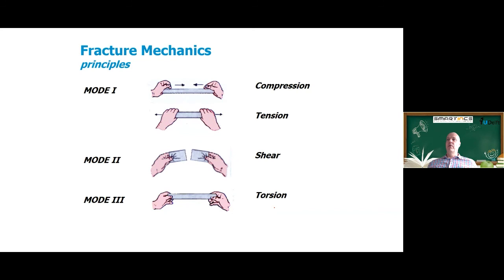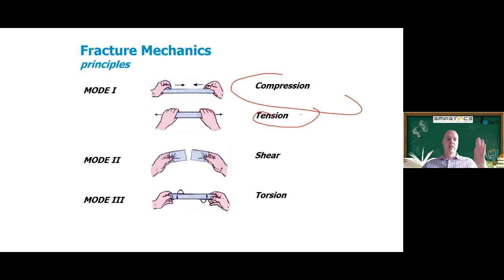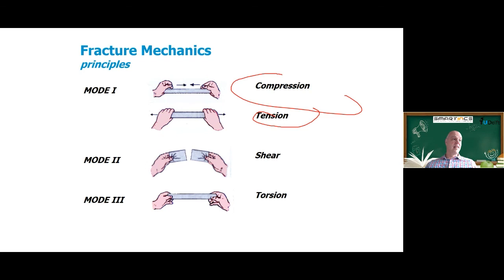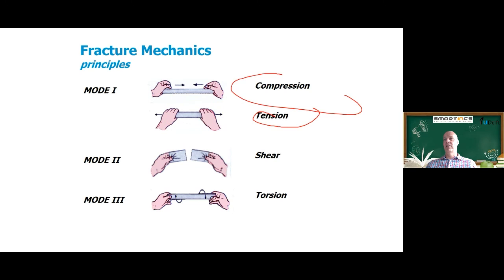Fracture of a material can occur in mode one (tension/compression), mode two (shear), or mode three (torsion). In the lab we apply these loads cleanly, but in a real structure loaded by multiple forces, the stress in the material is always a combination of different loading modes, and fracture occurs accordingly.